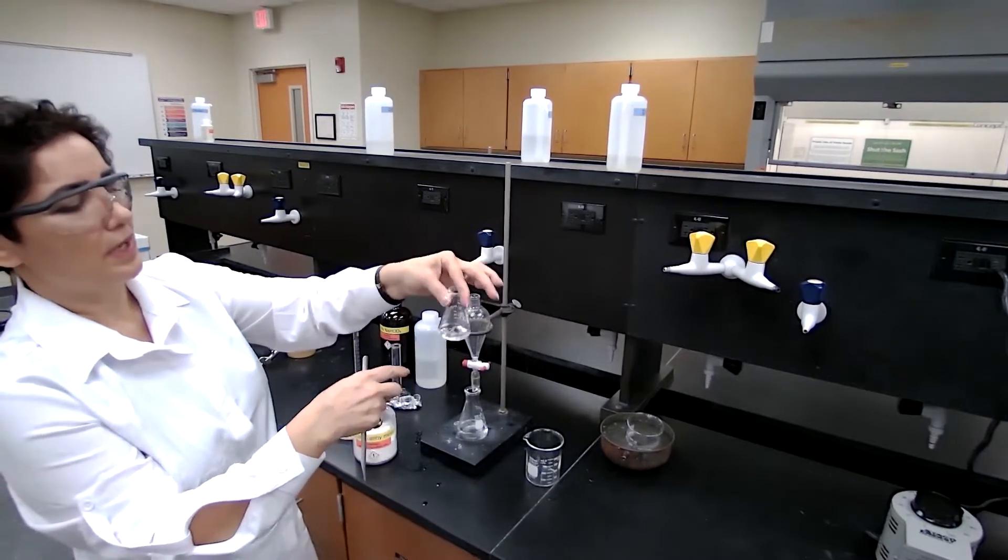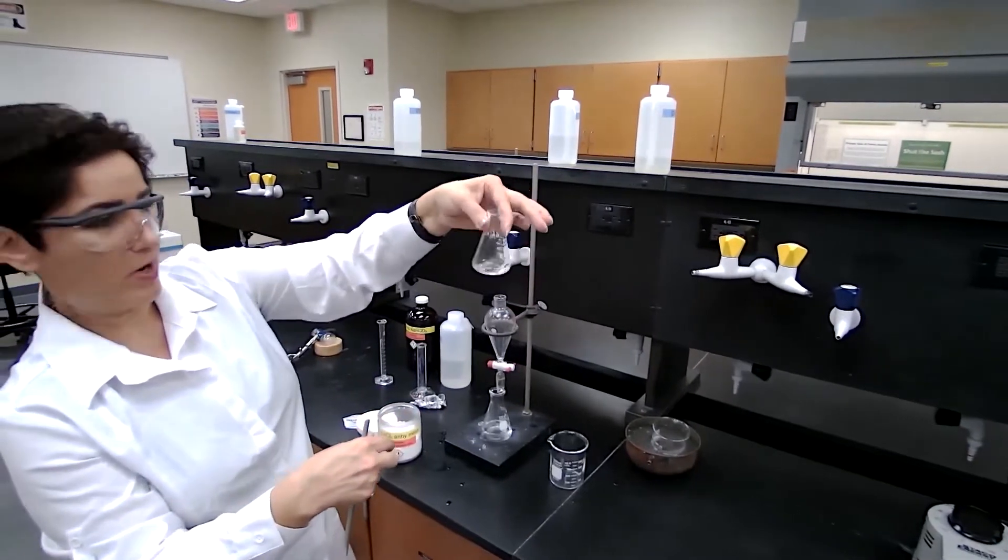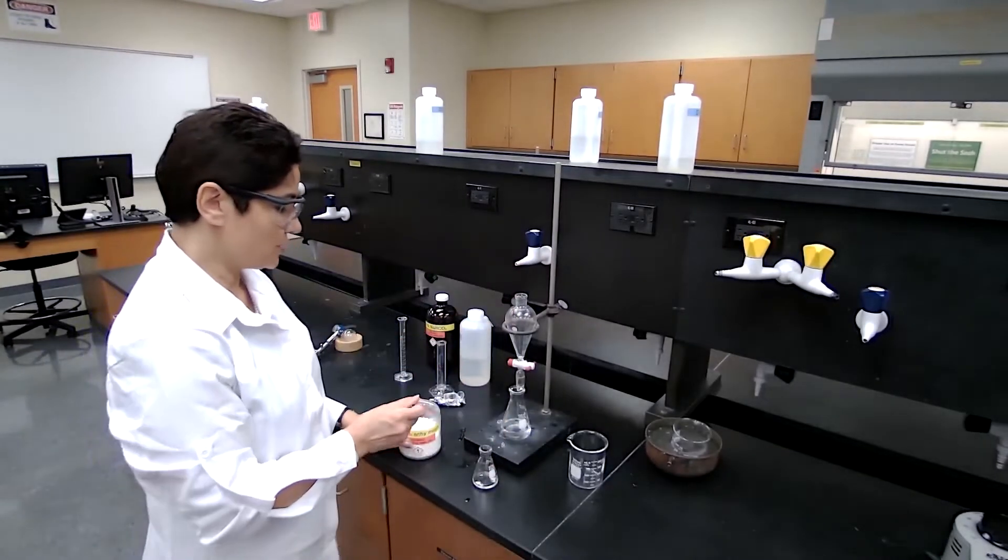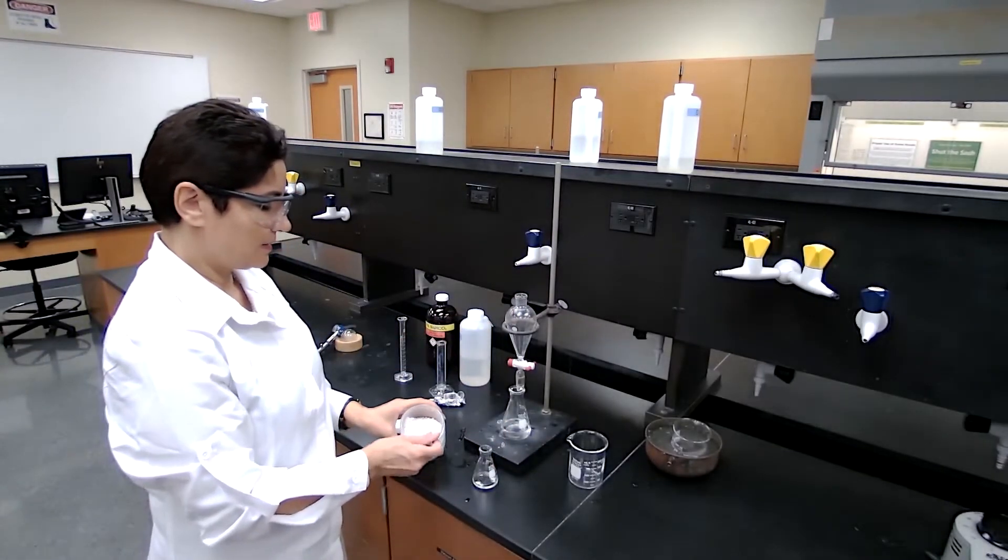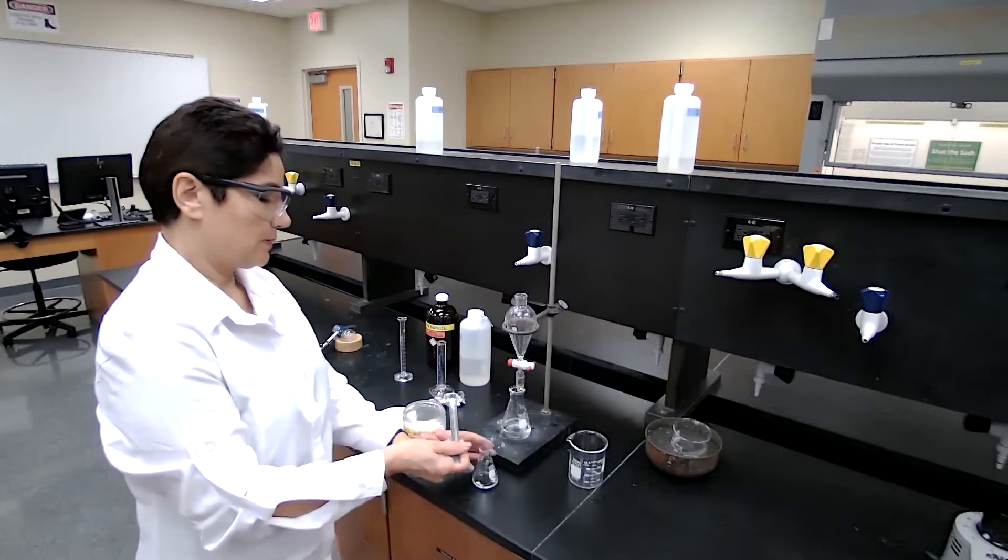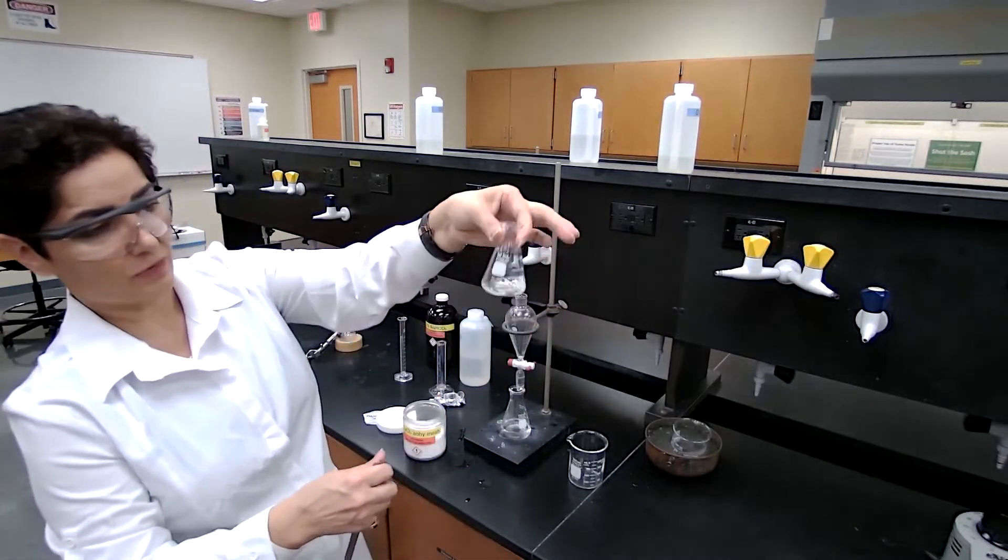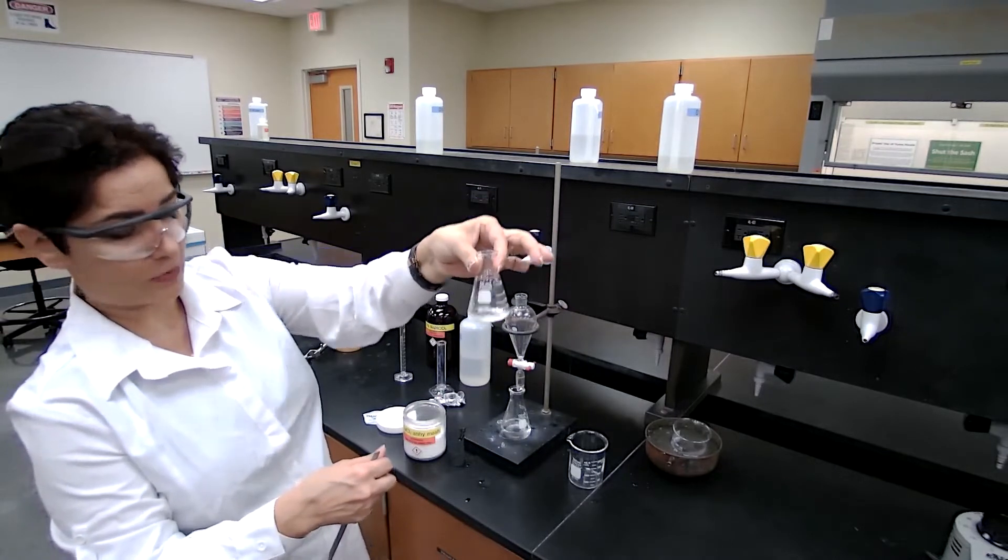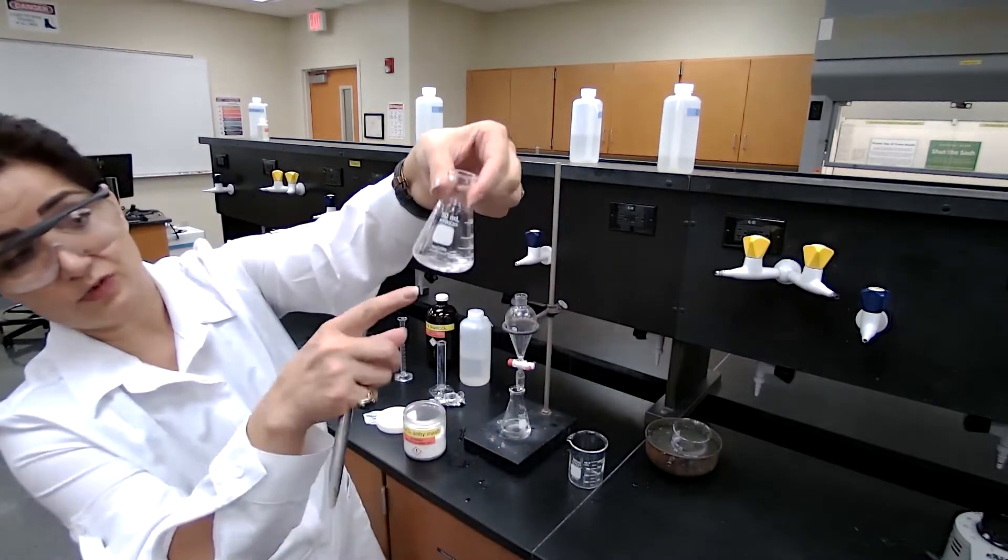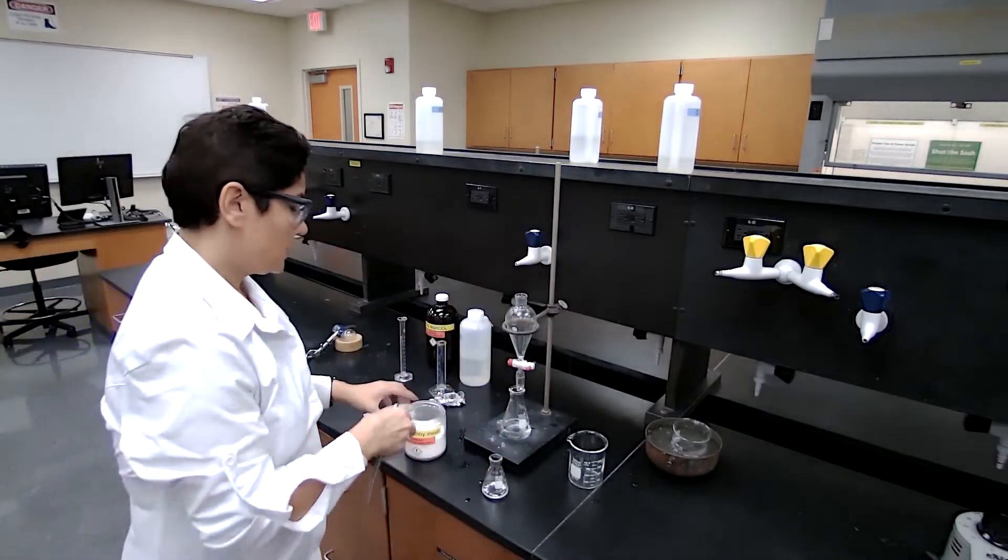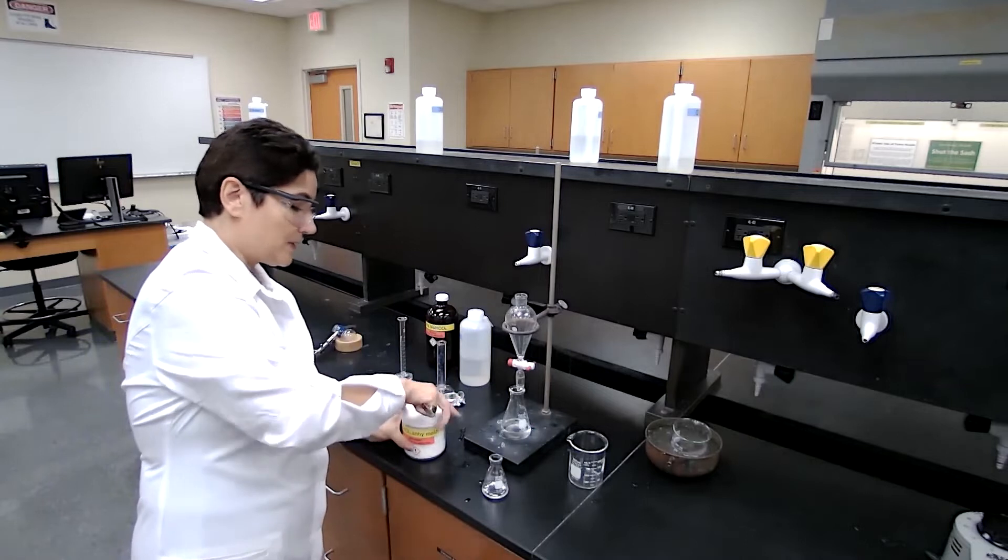When it clumps up, that means you still have some more water molecules or traces of moisture. So you add just a few more pellets or mesh of the anhydrous calcium chloride. Now the calcium chloride is moving around, which means I have added enough.